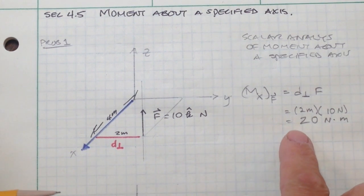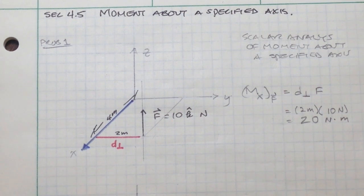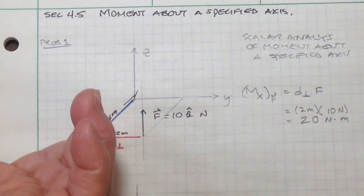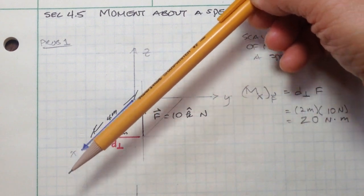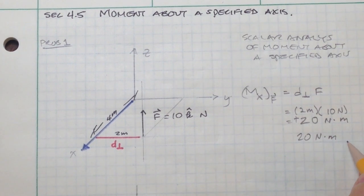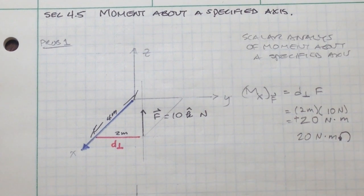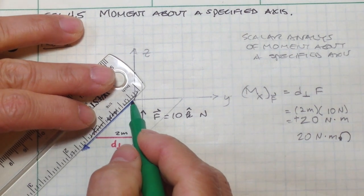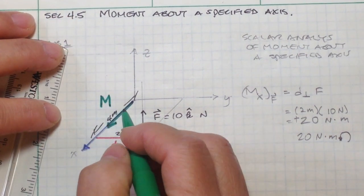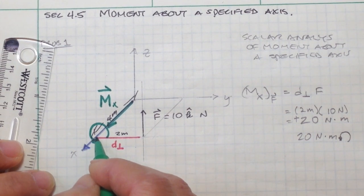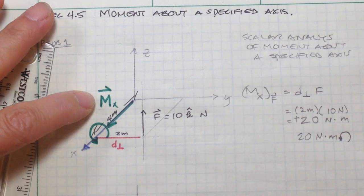Using the right-hand rule, we determine whether that's a positive or negative moment. We direct our fingers along the moment arm, sweep in the direction of F, and the thumb points in the positive x-direction. So it's a positive 20 newton meters, rotating counterclockwise. If I draw that moment as a vector on this diagram, the moment vector is right here, showing counterclockwise direction on the x, y, z axis.